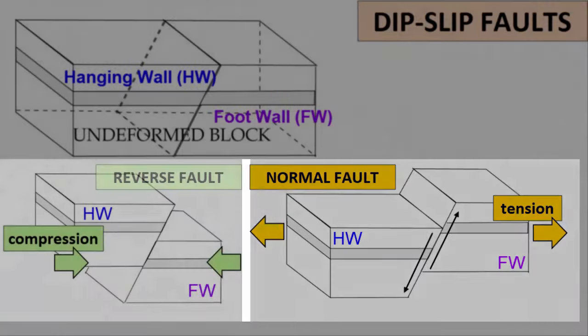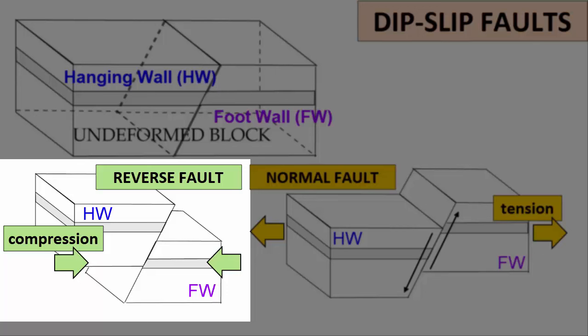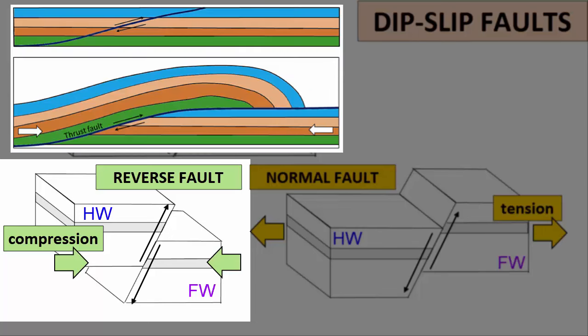Reverse faults are dip-slip faults caused by compression. As stress pushes rocks together, one rock block rides up atop another. If the hanging wall has moved upward relative to the foot wall, the fault is a reverse fault. Thrust faults are reverse faults that develop at very low angles, nearly horizontal, and thus may be difficult to recognize.